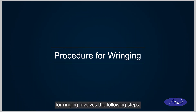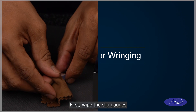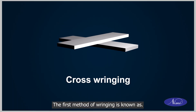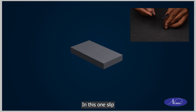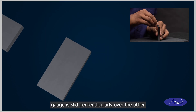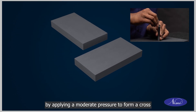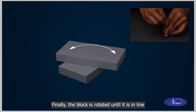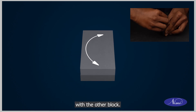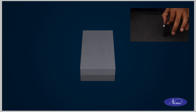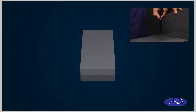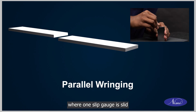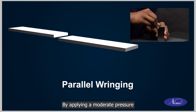The procedure for wringing involves the following steps. First, wipe the slip gauges with a clean chamois leather cloth. The first method of wringing is known as cross wringing, where one slip gauge is slid perpendicularly over the other by applying moderate pressure to form a cross or plus shape, and then the block is rotated until it is in line with the other block. The second method is parallel wringing, where one slip gauge is slid parallel over the other by applying moderate pressure.